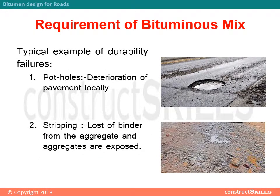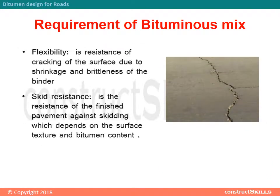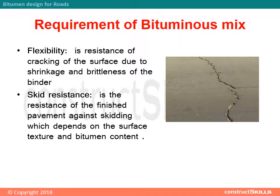Typical examples of durability failures include: 1) potholes — local deterioration of the pavement; 2) stripping — loss of binder from the aggregate, leaving aggregates exposed. Flexibility is the resistance to cracking of the surface due to shrinkage and brittleness of the binder. Skid resistance is the resistance of the finished pavement against skidding, which depends on surface texture and bitumen content.